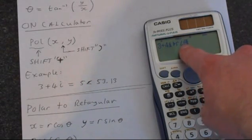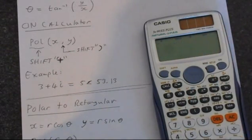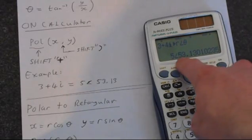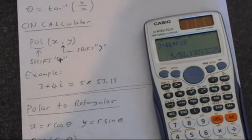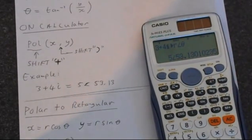2, r, and angle of theta. And pressing equals gives you the same thing, but in a slightly nicer notation. So you can do it that way if you prefer, but the pol and rect functions are more efficient.